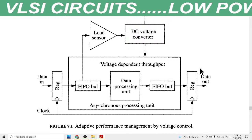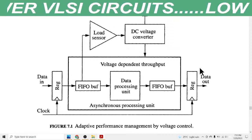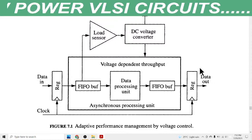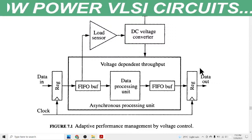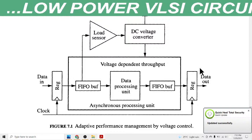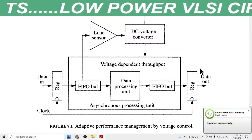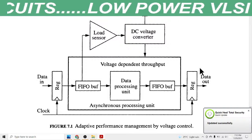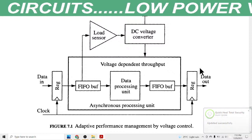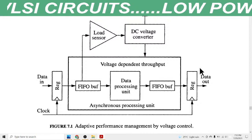In an asynchronous circuit, the output of one sub-circuit is provided as input to another sub-circuit, meaning we cannot provide the clock pulse simultaneously. But in a synchronous circuit, we provide the clock pulse to all sub-circuits simultaneously.